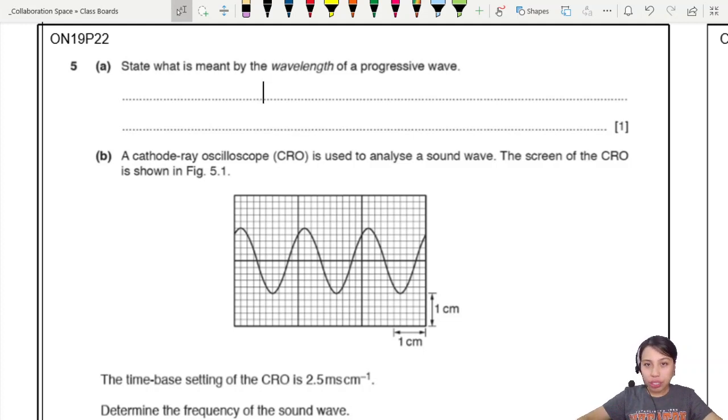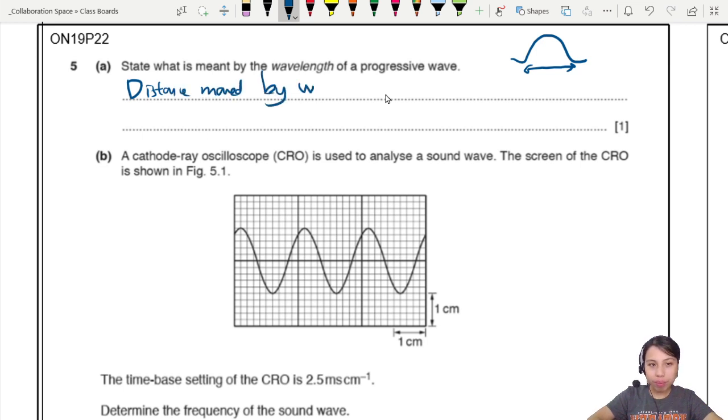This is a waves and superposition question. You start off by defining or stating what is meant by a wavelength of a progressive wave. Usually we say wavelength is one complete cycle, right? That would be the distance moved, actually. So we say the distance moved by your wave front.